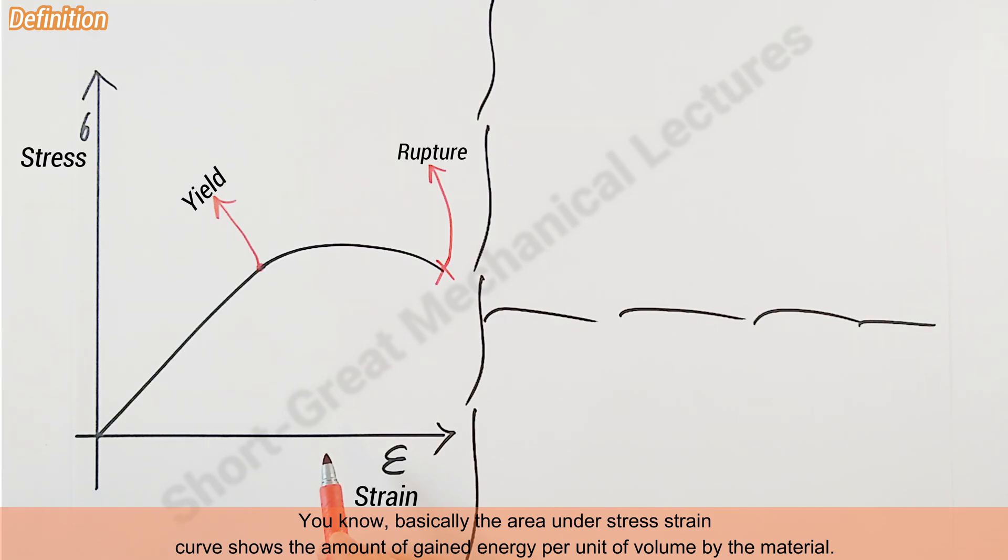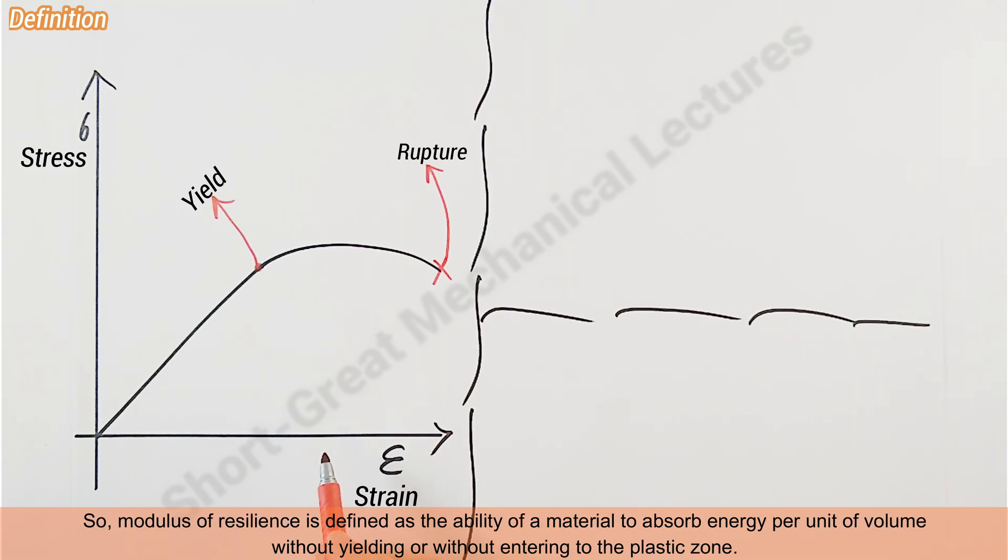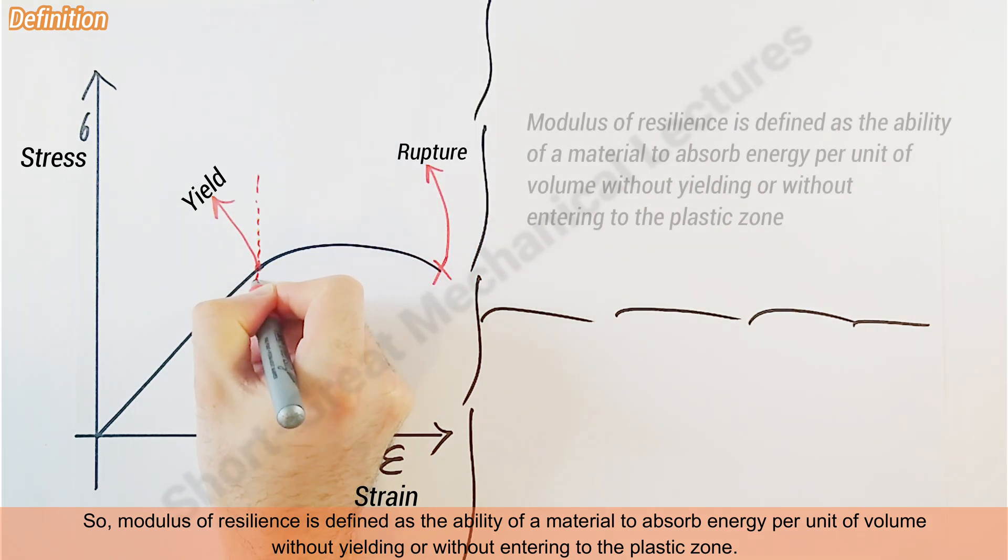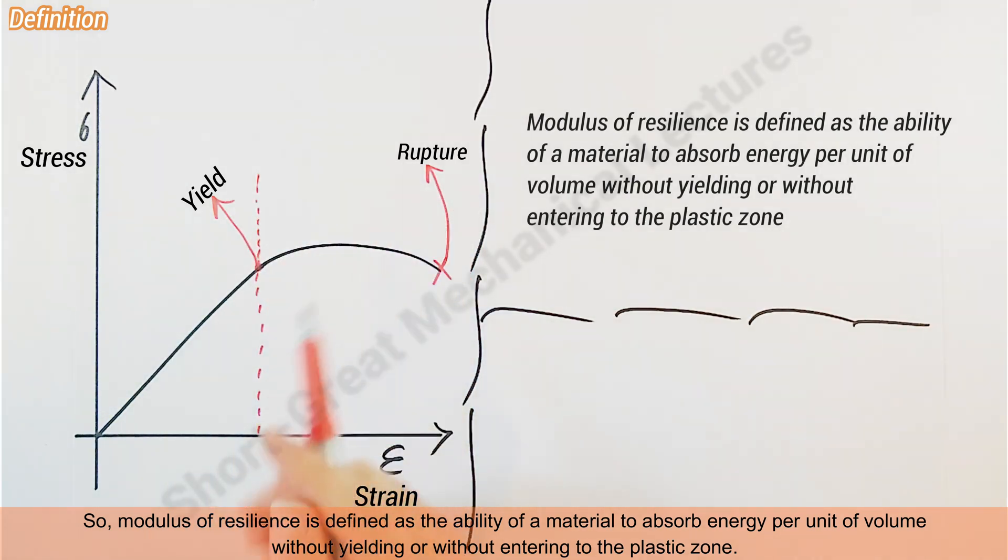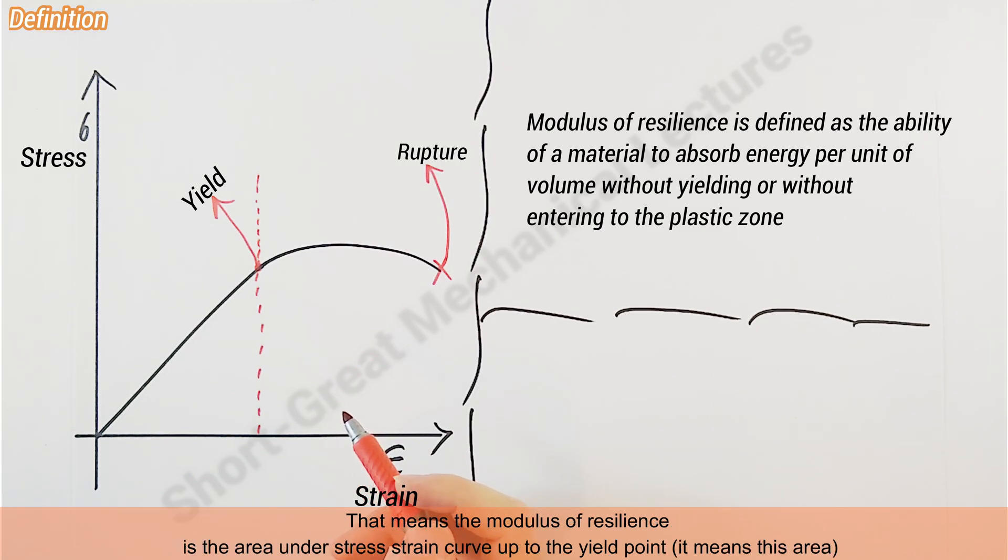So modulus of resilience is defined as the ability of a material to absorb energy per unit of volume without yielding or without entering the plastic zone. That means the modulus of resilience is the area under the stress-strain curve up to the yield point—it means this area.